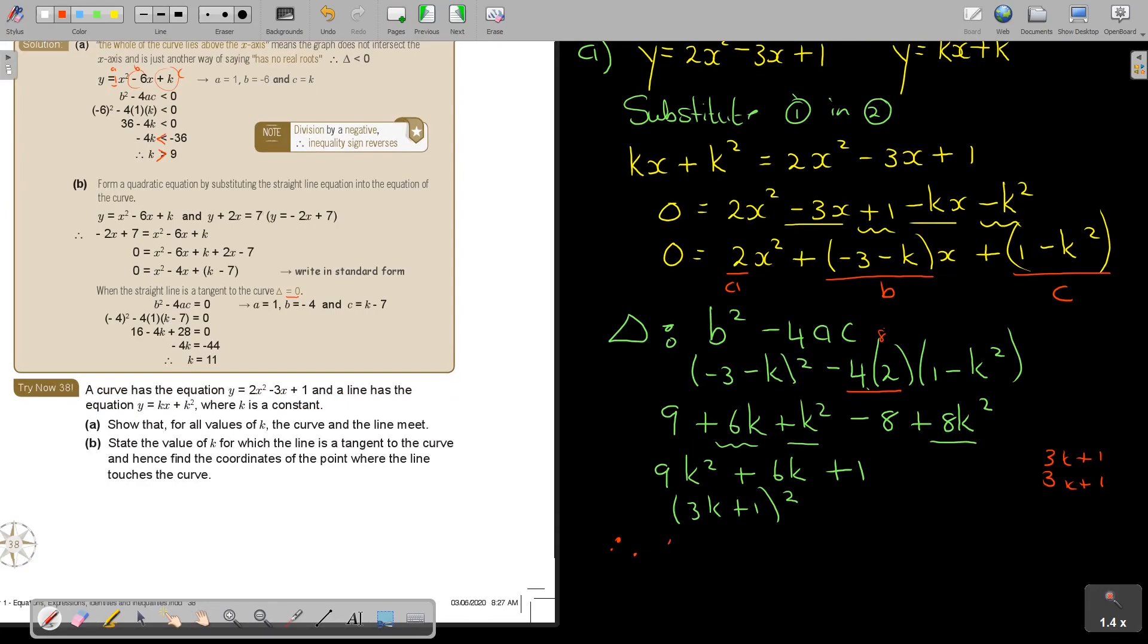By saying, Therefore, the discriminant is bigger or equal to 0 for all real values of K. The curve and the line meet or intersect. And that shows that all the line meet. So it will meet. And it's due to that, no matter what you do there, it can be 0 or it will be bigger than 0 due to that square element.